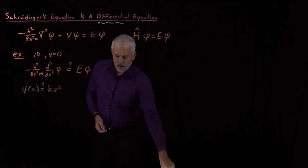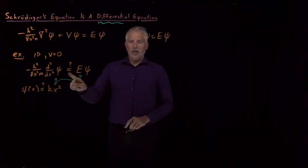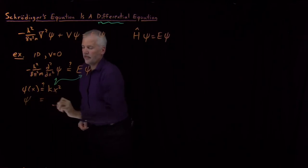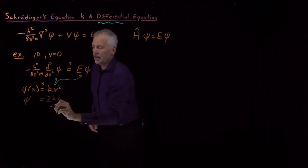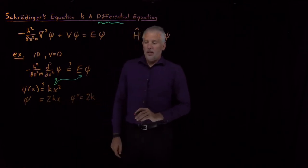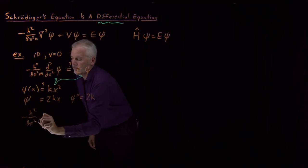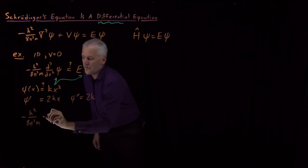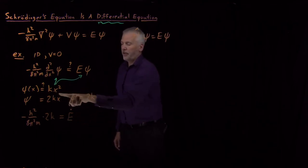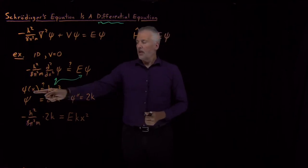Does this function solve Schrödinger's equation? In other words, when I insert this candidate wave function on both sides of Schrödinger's equation, is the equal sign appropriate? To plug it into the left side, I need the second derivative. The first derivative of kx-squared is 2kx; the second derivative — taking another derivative of 2kx — is just 2k. If I insert those into our simplified Schrödinger's equation, I'm asking whether minus h-squared over 8 pi-squared m times 2k equals E times the wave function kx-squared.